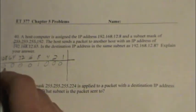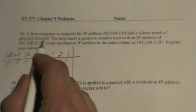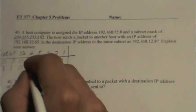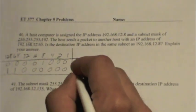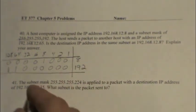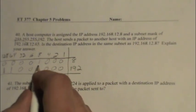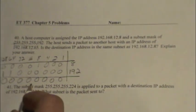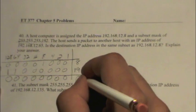Now we apply the mask. Since it's a mask, we see consecutive ones from the left. To make 192, 128 plus 64 equals 192, so we have a 1, a 1, and the rest are zeros. Applying the AND function, there's no overlap with the 8-bit position, so the result is 0. This address is part of the 0 subnet.